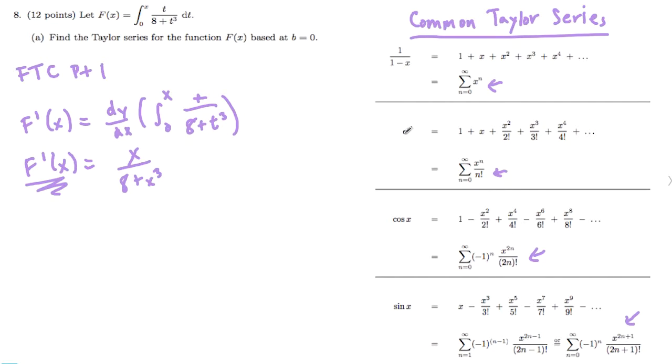This equation doesn't have an e to the x, so we can rule that one out. It doesn't have a cosine, so we can rule that out. And it doesn't have a sine, so we can also rule that out. So the one that we want it to sort of fit the mold of is 1 over 1 minus x.